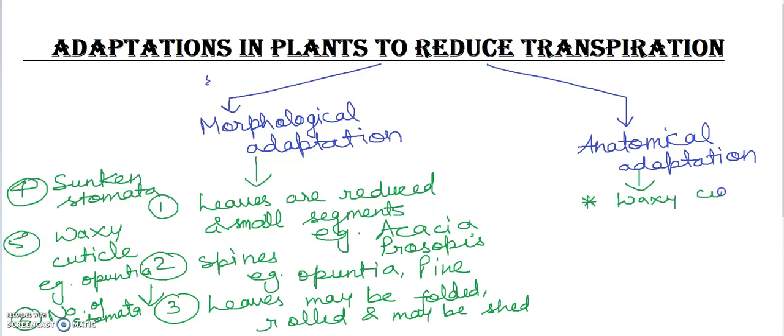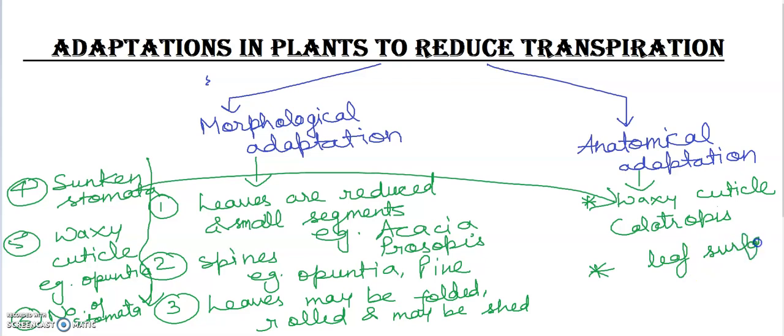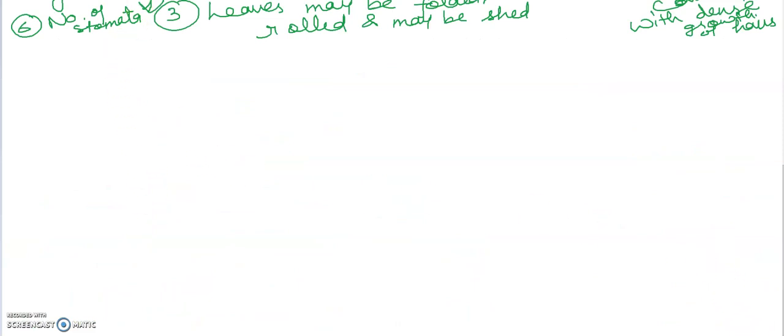Waxy cuticle - you can write this point in morphology also. The number of stomata will also be reduced. Leaf surface may be covered with fine cutinized hair as in calotropis. And leaves may have sunken stomata. These points you can write in anatomical adaptations - stem will be covered with waxy cuticle and sunken stomata. Number of stomata on the leaves are reduced, and it may be covered with fine structures. Leaf surface may be covered with dense growth of small hair-like structures, fine hair-like structures, as in calotropis.